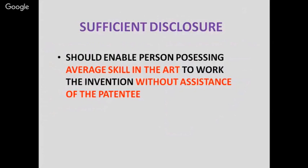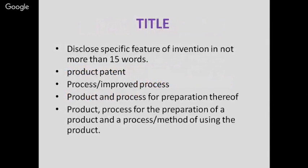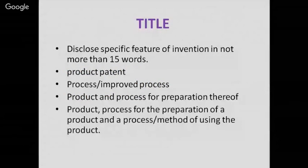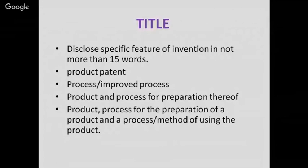Sufficient disclosure is important — it should enable any person possessing skill in the art to work the invention without assistance from the patentee. That much knowledge should be in the public domain when the patent is applied for. Regarding the title of invention for filing the patent, we must disclose the specific feature of the invention in not more than 15 words. It can be a product patent, process, improved process, or product and process for preparation thereof.